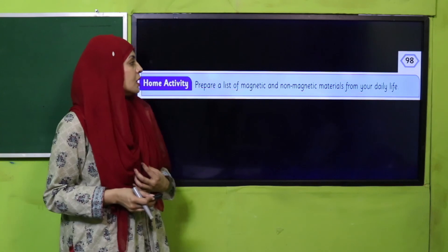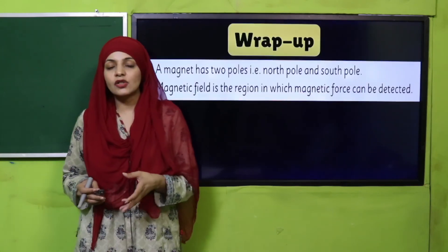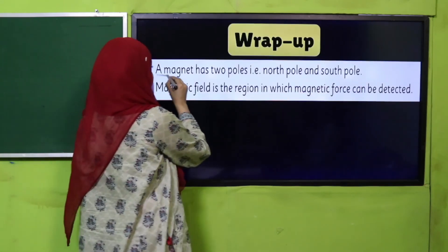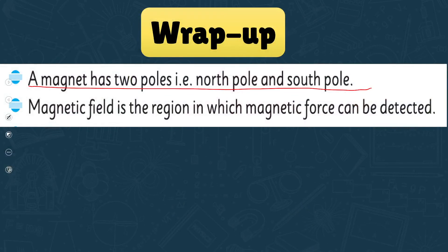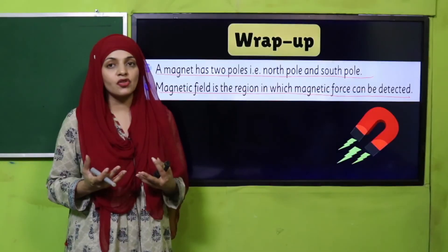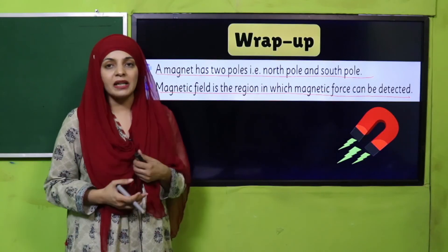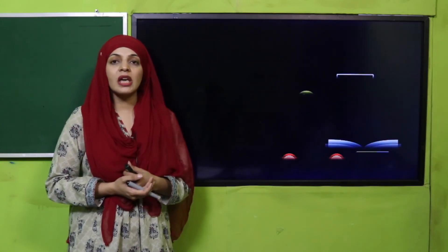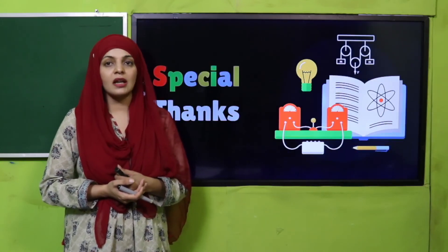In today's lecture we have learned that a magnet has two poles: north pole and south pole. Magnetic field is the region in which magnetic force can be detected. We have also learned that opposite poles attract each other and like poles repel each other. Keep everybody around you safe. Have a good day. Thank you so much and Allah Hafiz.